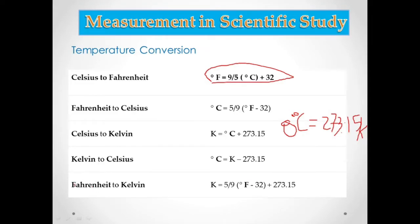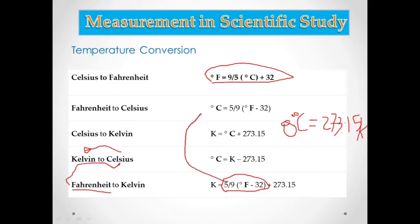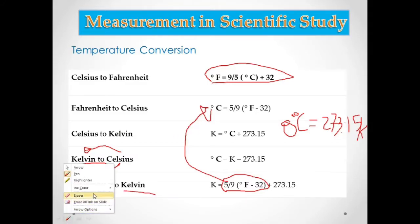From Fahrenheit to Kelvin, there is no direct conversion, so you need to convert Fahrenheit first to Celsius, then from Celsius convert it to Kelvin. That's why you add 273.15 after converting to Celsius. Put all of these conversions on your index card so that you will be guided.